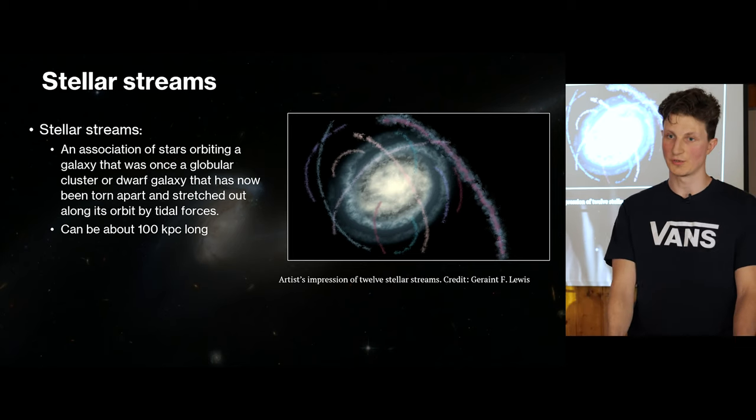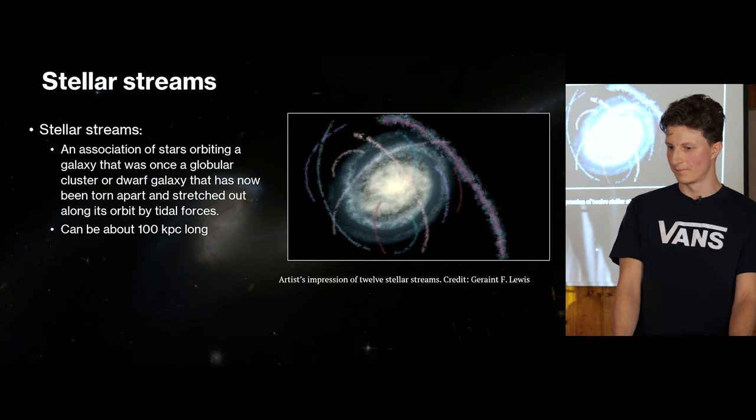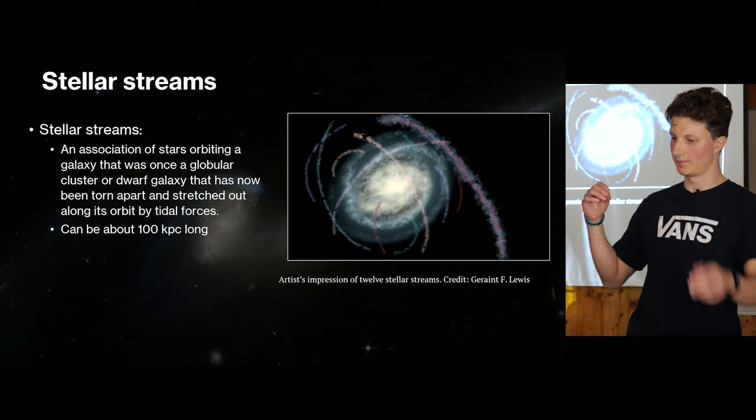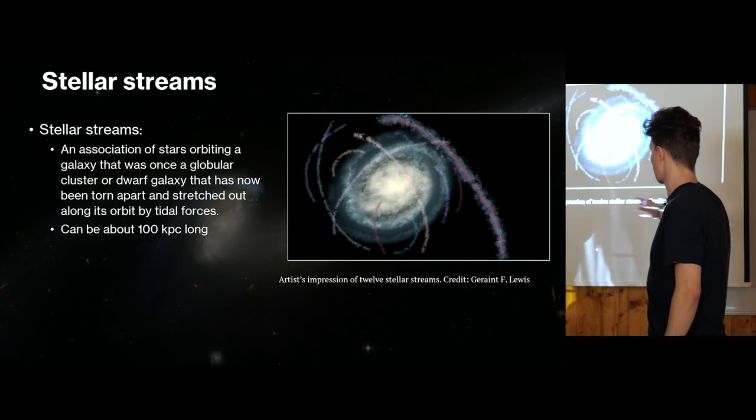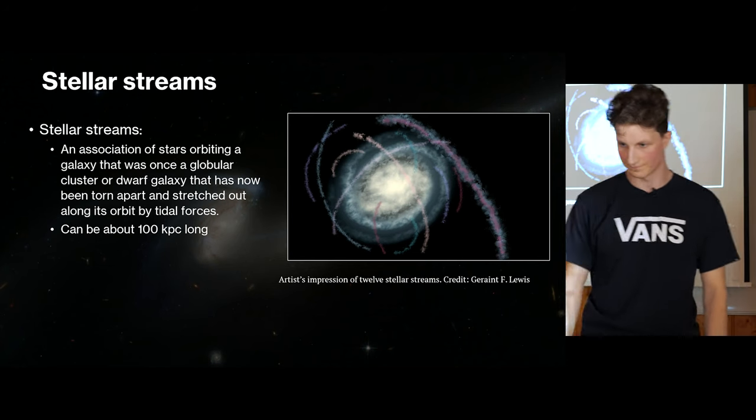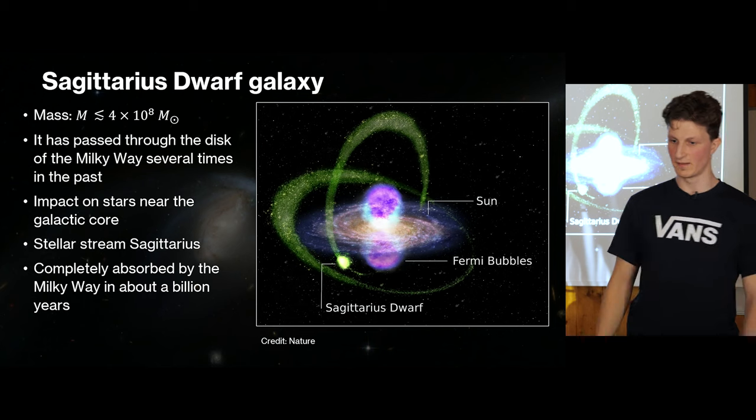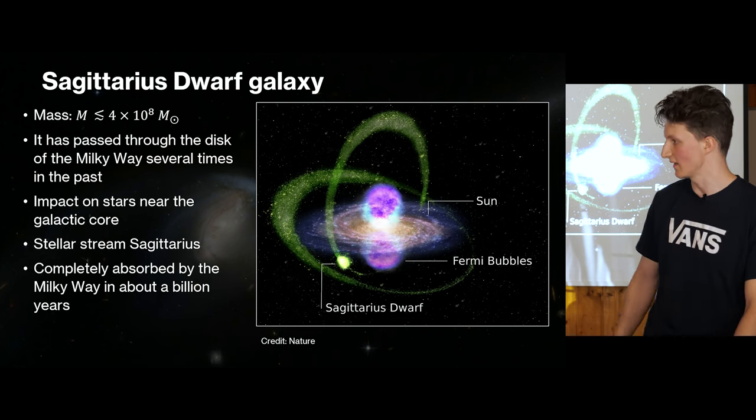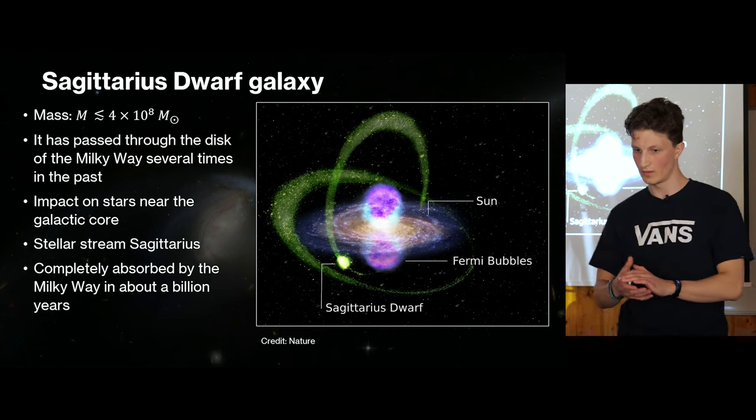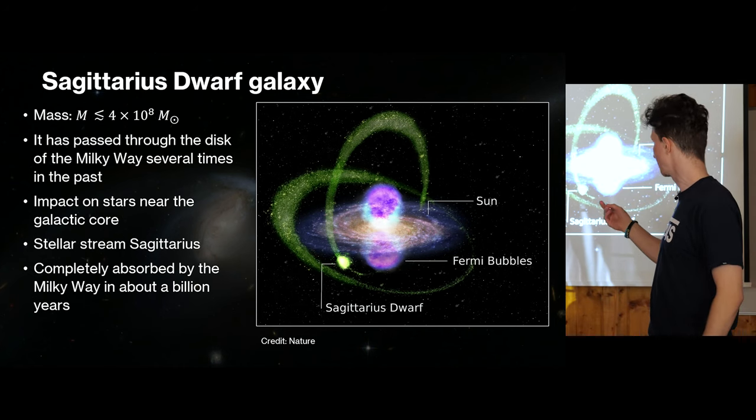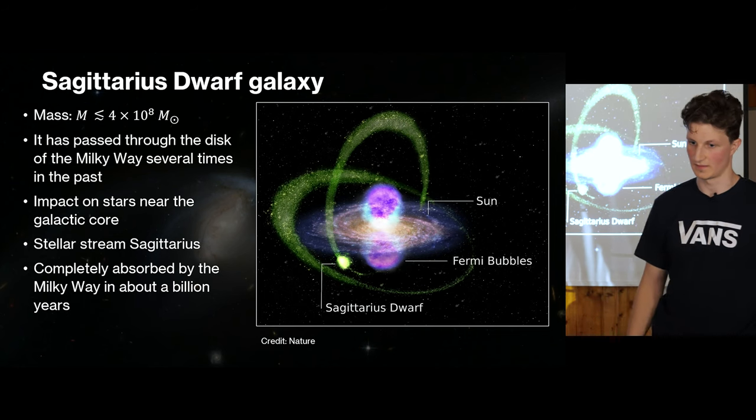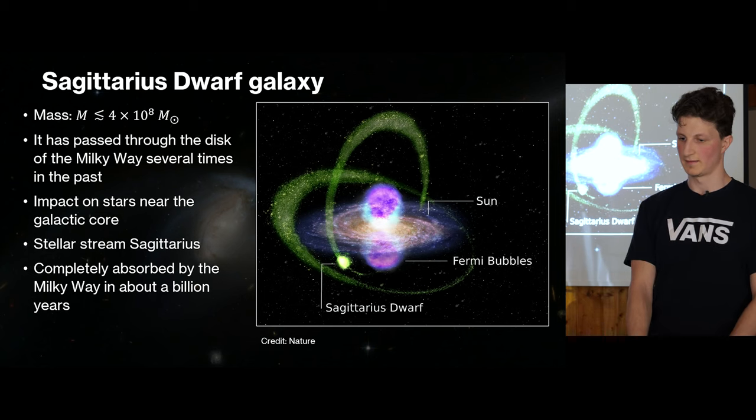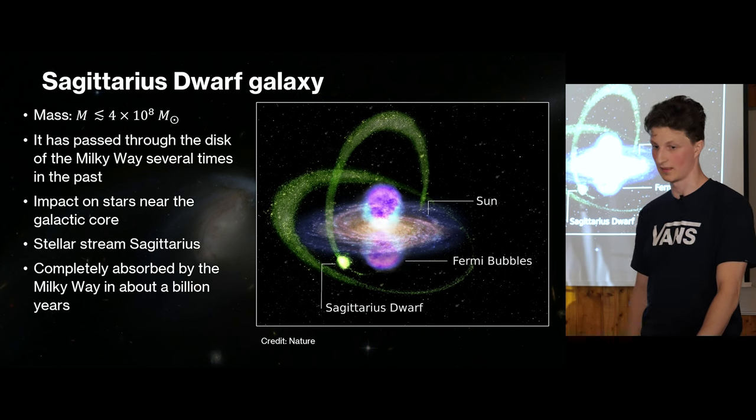But first we must talk about stellar streams. Such interactions lead to the formation of stellar streams which are stars from globular clusters or dwarf galaxies and because of tidal force they form such stream-like structures. They can be very long, about 100 kiloparsecs. Such streams can be observed as results of interaction between Sagittarius galaxy and Milky Way. Sagittarius galaxy is a dwarf galaxy which exists now and rotates around our galaxy which leads to the formation of Sagittarius streams. It may have impact on stars near the galactic core and may be absorbed by Milky Way in about a billion years.